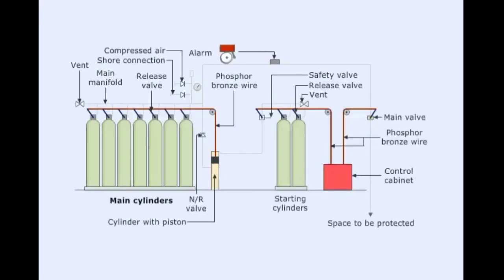A fixed carbon dioxide fire extinguishing system consists of a control cabinet, starting cylinders, main cylinders, main manifold, main valve, release valves, associated pipelines, and fittings.